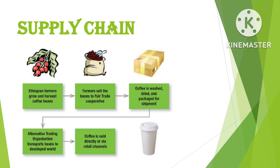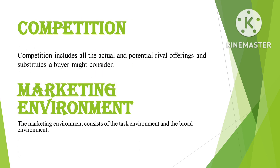Each company in the chain captures only a certain percentage of the total value generated by the supply chain's value delivery system. When a company acquires competitors or expands upstream or downstream, its aim is to capture a higher percentage of supply chain value. For example, an automobile manufacturer can buy steel from U.S. Steel, a foreign firm in Japan or Korea, a mini mill such as Nucor, aluminum parts from Alcoa, or engineered plastics from Saudi Basic Industries Corporation instead of steel.